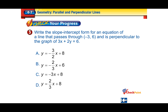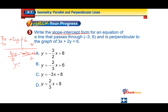Take the original equation 3x plus 2y equals 6. Subtract 3x from both sides to get 2y equals negative 3x plus 6. Then divide both sides by 2, giving y equals negative 3 over 2 times x plus 3. Now take that slope — is it perpendicular or parallel? It says perpendicular. So flip negative 3 over 2 and multiply by negative 1, giving positive 2 over 3.